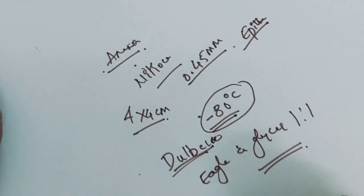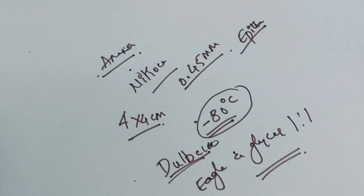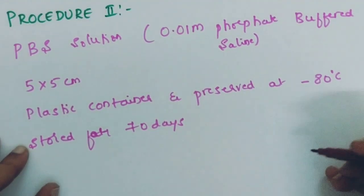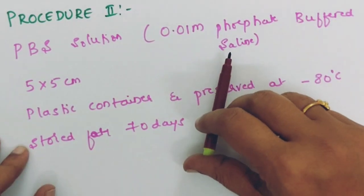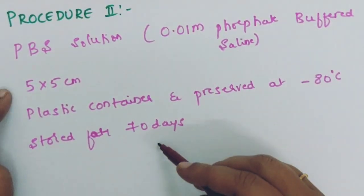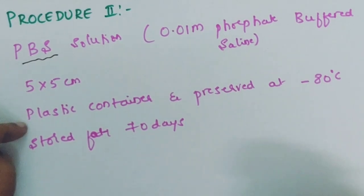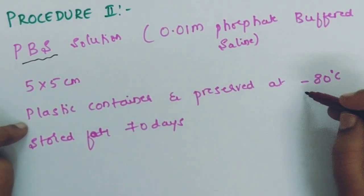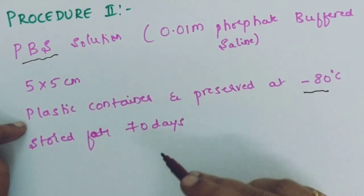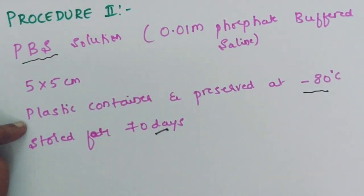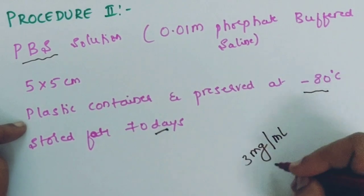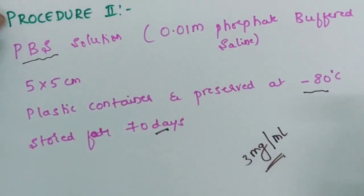Before transplantation, the amniotic membrane is taken out and thawed at room temperature, then rinsed at least 3 times in saline. This completes procedure 1. In procedure 2, the membrane is washed with a physiological phosphate buffered saline solution, cut into 5 x 5 cm pieces, washed again with PBS, transferred into plastic containers, and preserved at minus 80 degrees centigrade. Stored this way, the vials can be kept for 70 days. To use, thaw for 10 minutes at room temperature and soak in normal saline containing gentamicin at 3 mg per ml for 3 minutes.